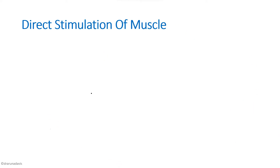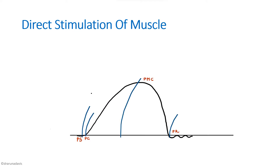Now we want to know the seat of fatigue in an isolated nerve muscle preparation. We directly stimulate the muscle, and we can see that we can still get a contraction, which means the muscle itself has not fatigued. We can also stimulate the nerve, and it will show that the nerve is also not fatigued. This means the seat of fatigue in an isolated nerve muscle preparation is the neuromuscular junction.